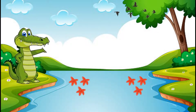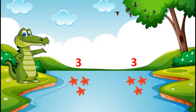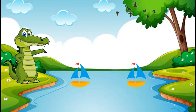Now on the left side there are one, two, three starfish and on the right side there are one, two, three starfish. As we have the same number of starfish on both sides, we will put an equals to sign and we will say that three is equals to three.